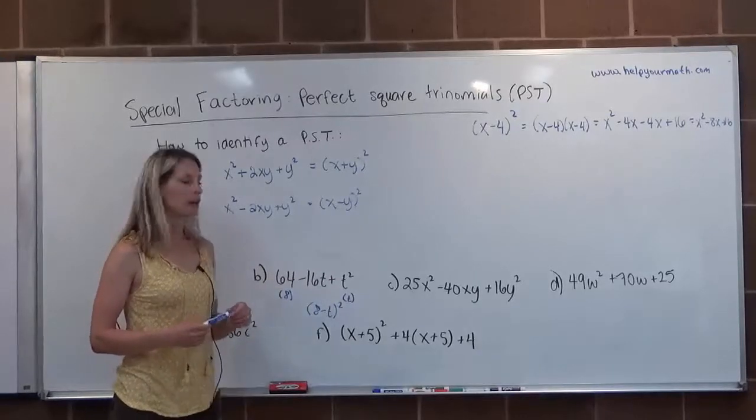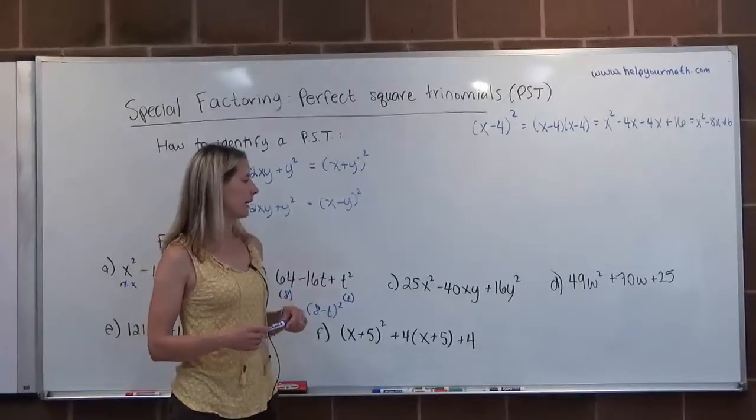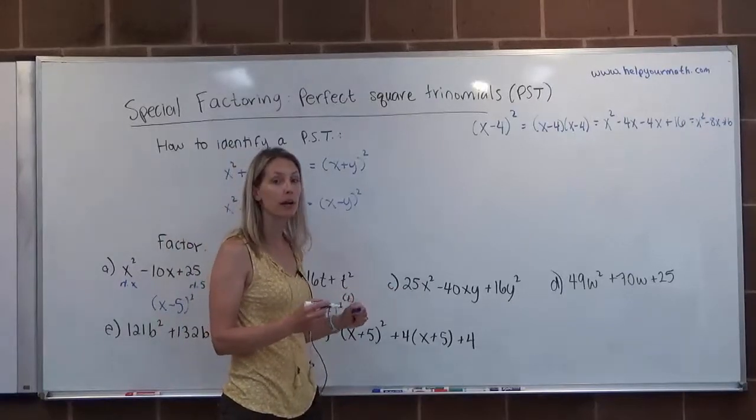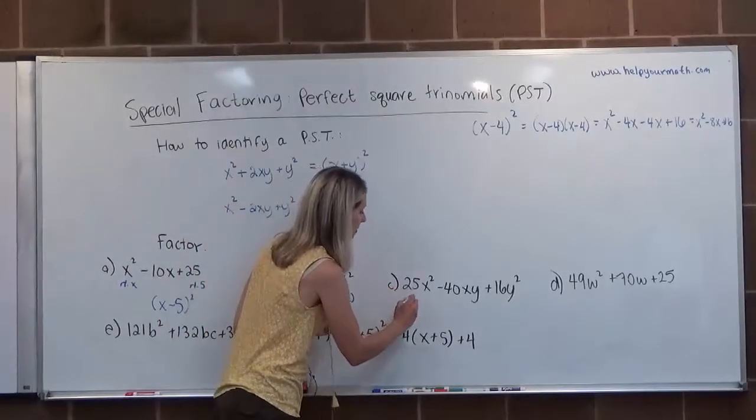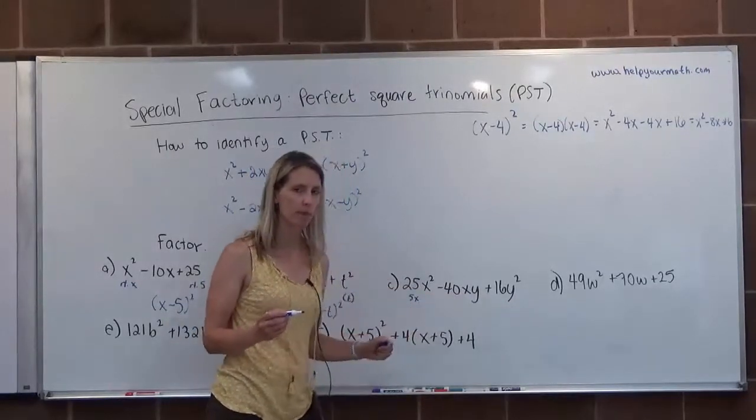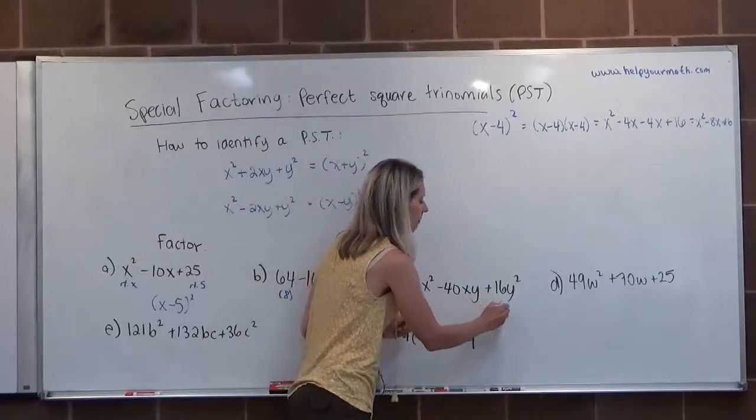For letter C, we have 25X squared minus 40XY plus 16Y squared. Is 25X squared a perfect square? Yes it is. It has a root of 5X. Is 16Y squared a perfect square? Sure. It has a root of 4Y.